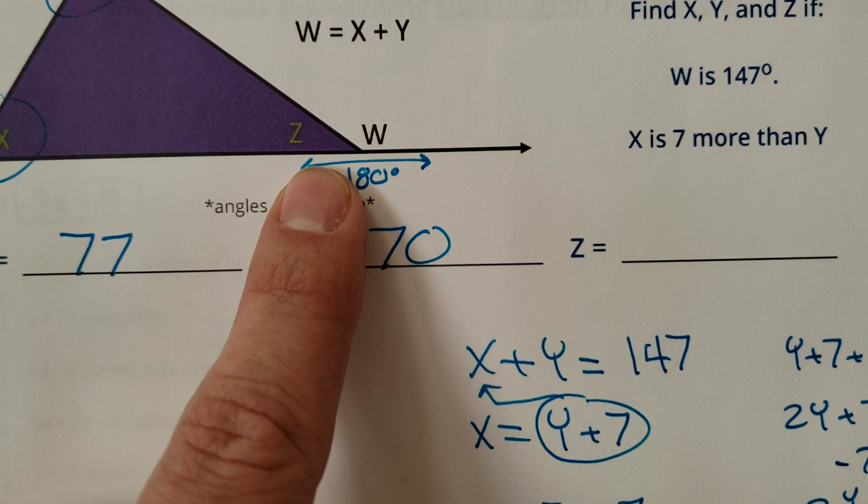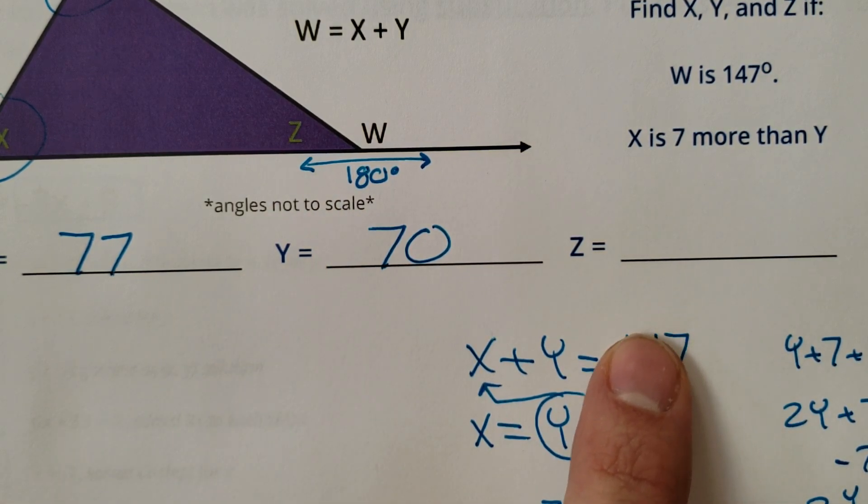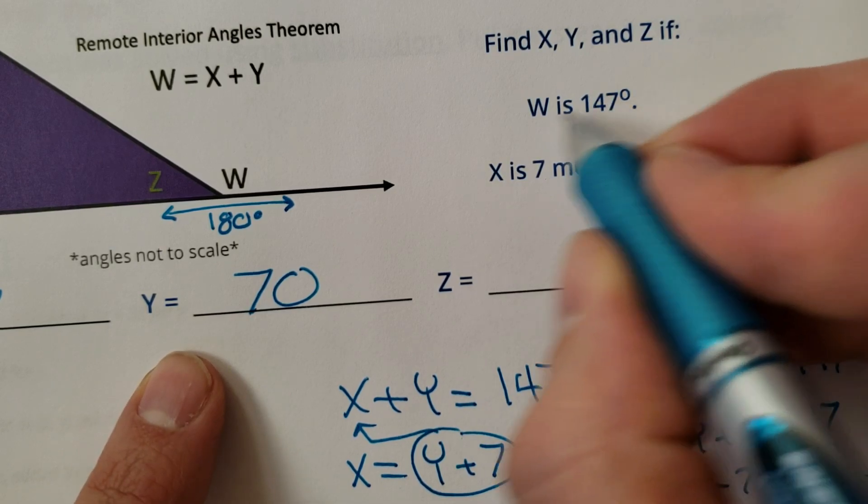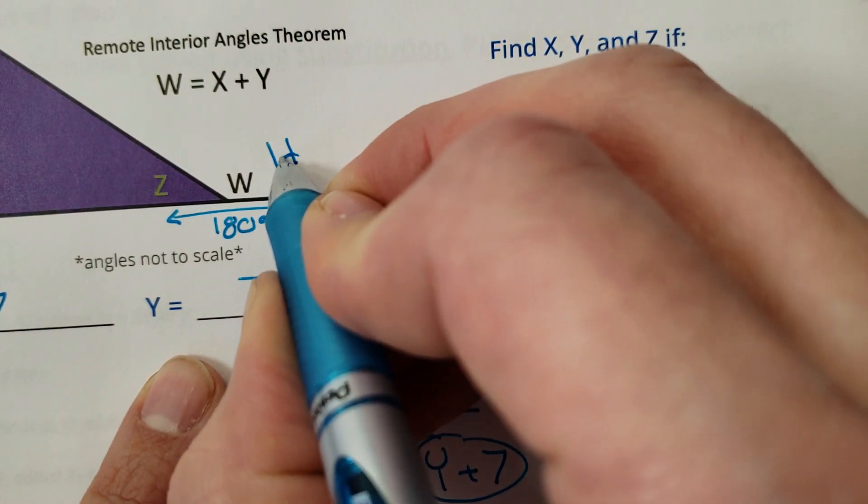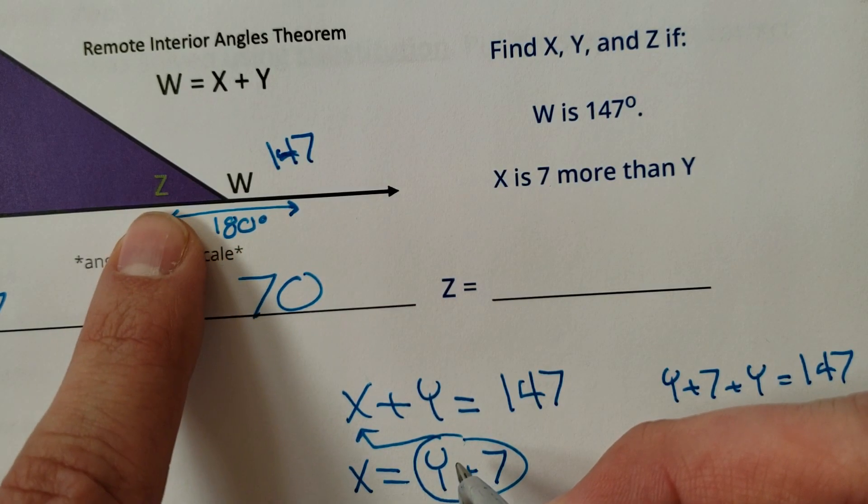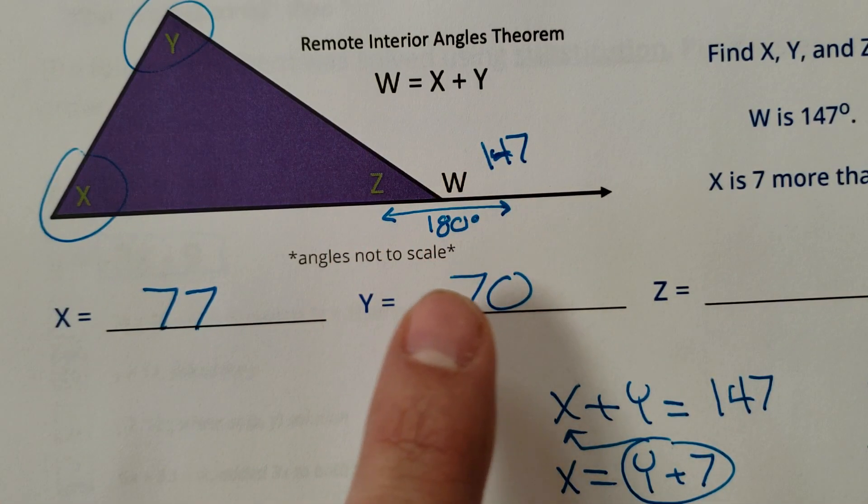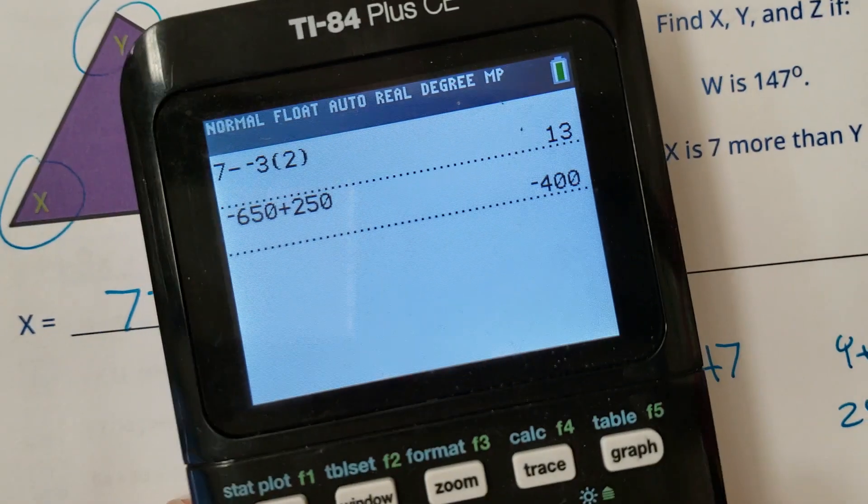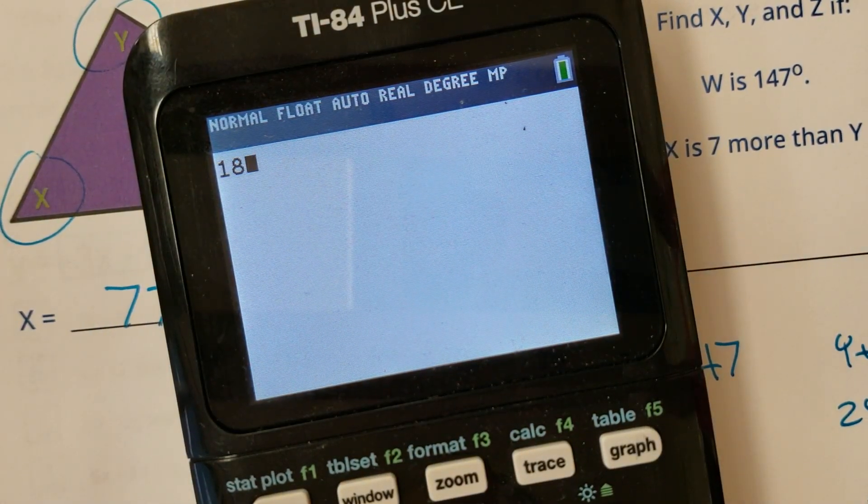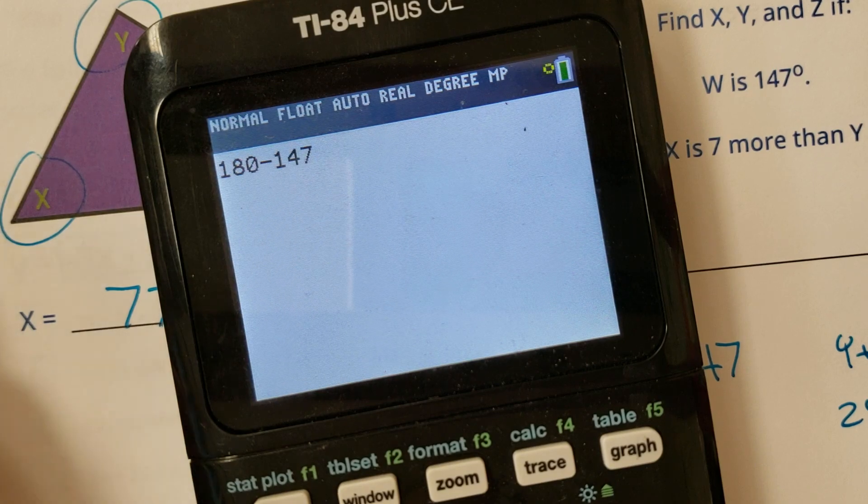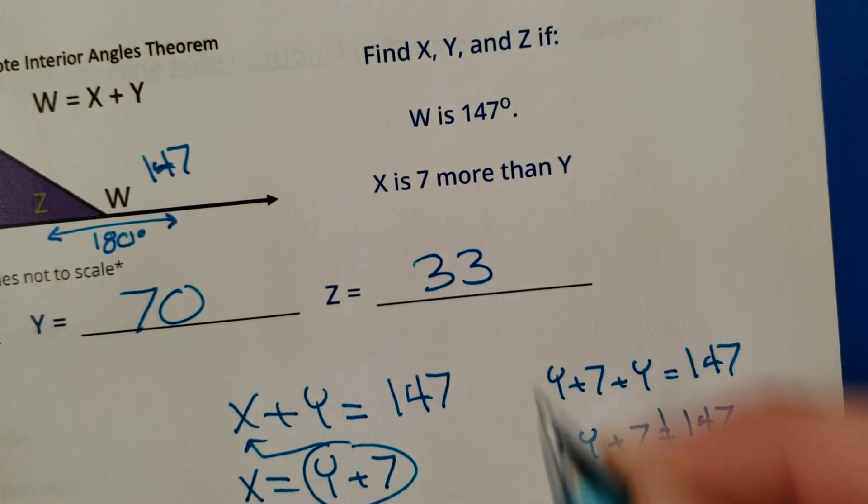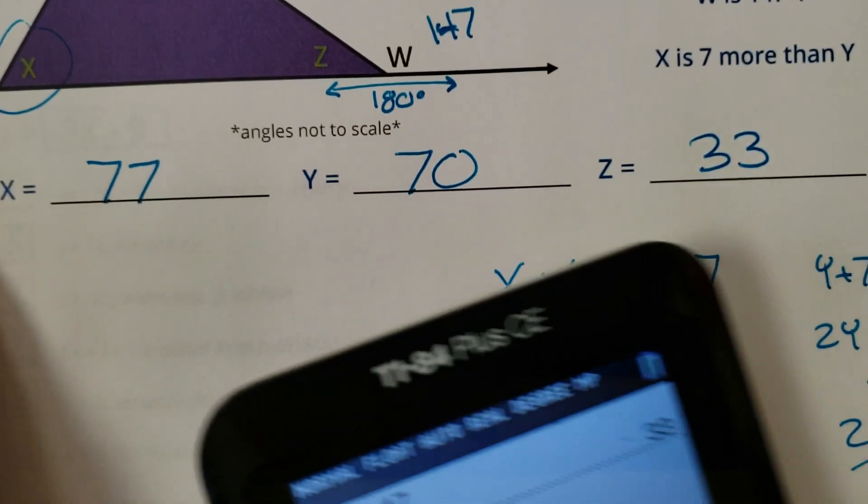And then Z, how do we find Z? We actually could have found that one first. 147 is angle W, and then angle Z needs to make 180 with that. So if we go 180 minus 147, we'll get ourselves an answer: 180 minus 147, there we go, 33. Angle Z's got to be 33.